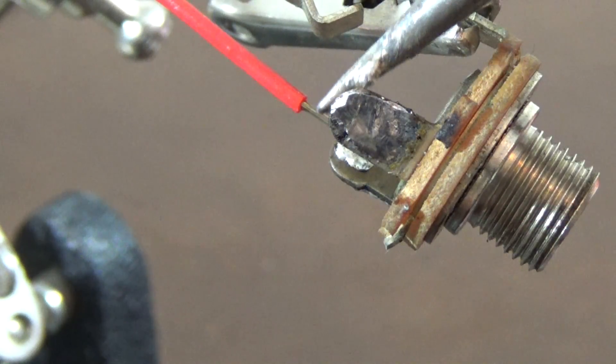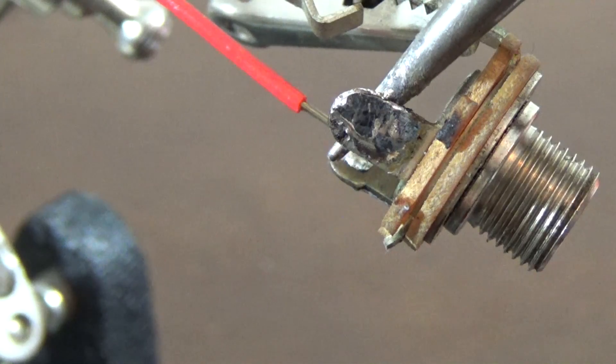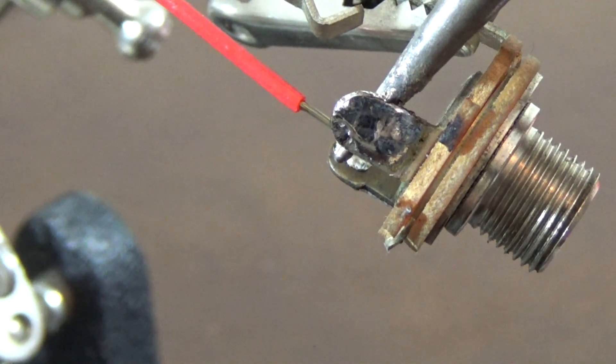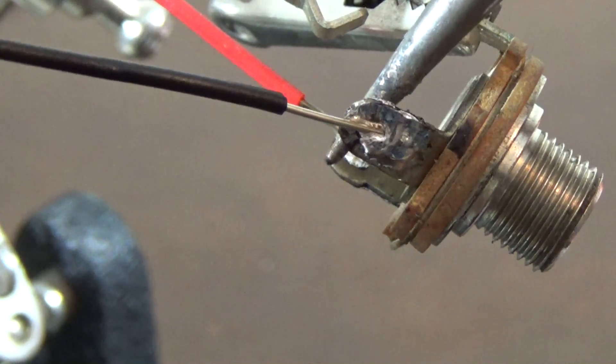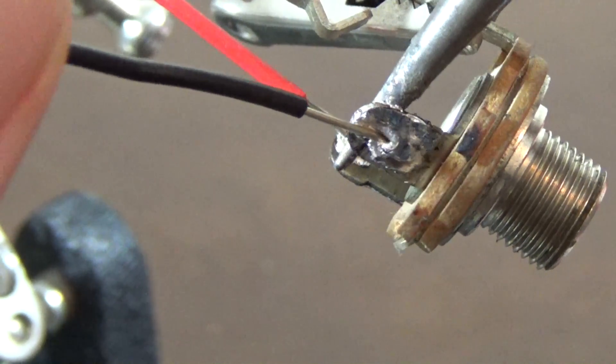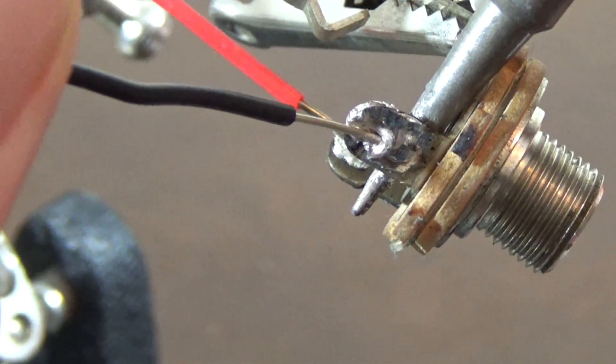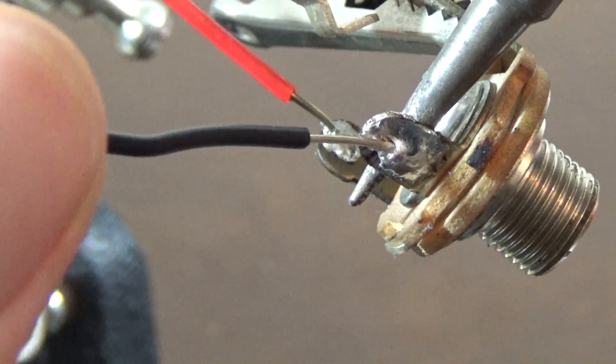Here's a look at the ground signal. Notice how when I put the iron on the backside the front side reflows. This is a good indication that there's an adequate heat transfer on this connector.